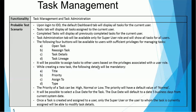A very important functionality handled in the IDD application is task management, and as an IDD tester we have to test whether task management is working correctly. We log into the IDD application, which takes us to the Dashboard tab, and then navigate to the Task tab where all tasks assigned to the given user will be available. We have to make sure tasks are correctly assigned. Completed tasks will also be displayed. The task administration tab will be available only for the super user role and will show all tasks for all users.